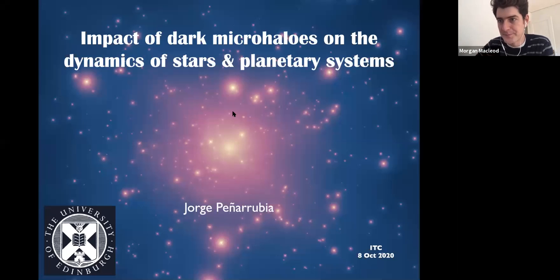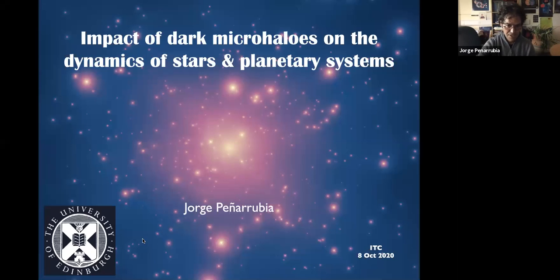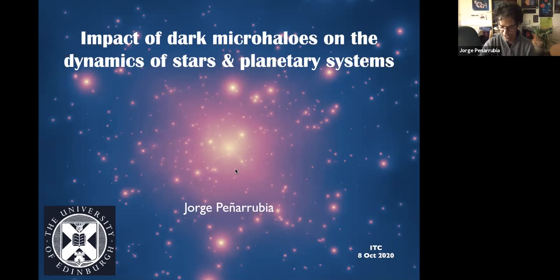Thank you, Morgan. So let me try to share my screen. When there's five minutes to go, Anna has a bell sound that she'll play. Can you see my screen and the cursor? Perfect. So today's talk is going to be about dark matter substructure and whether or not we can use it to put constraints on cold dark matter particles with masses above giga electron volts. We're going to look at the very fine detail of our galactic dark matter halo.